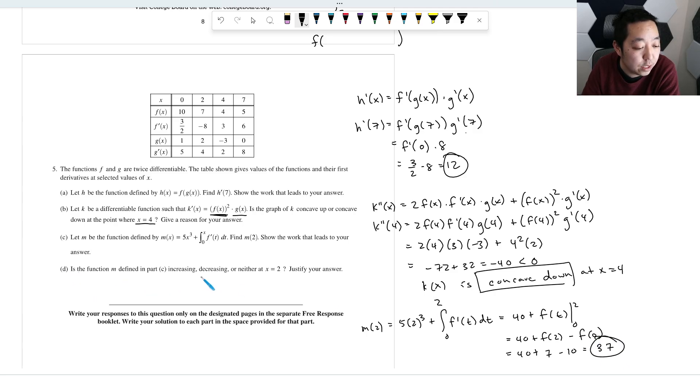Is the function m defined increasing, decreasing, or neither at x equals 2? So increasing or decreasing means the derivative is positive or negative. So what is the derivative? Derivative of 5x cubed is going to be 15x squared. And then what's the derivative here? You would plug in x into this, so you get f prime of x, because it's f prime there.